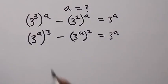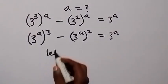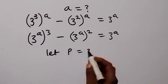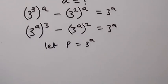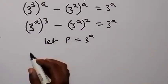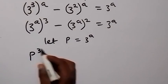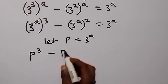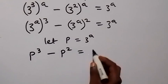Then we have 3 raised to power a common. So let a letter p be equal to 3 raised to power a, and then from here we can write this as p raised to power 3, minus p squared, equals p.